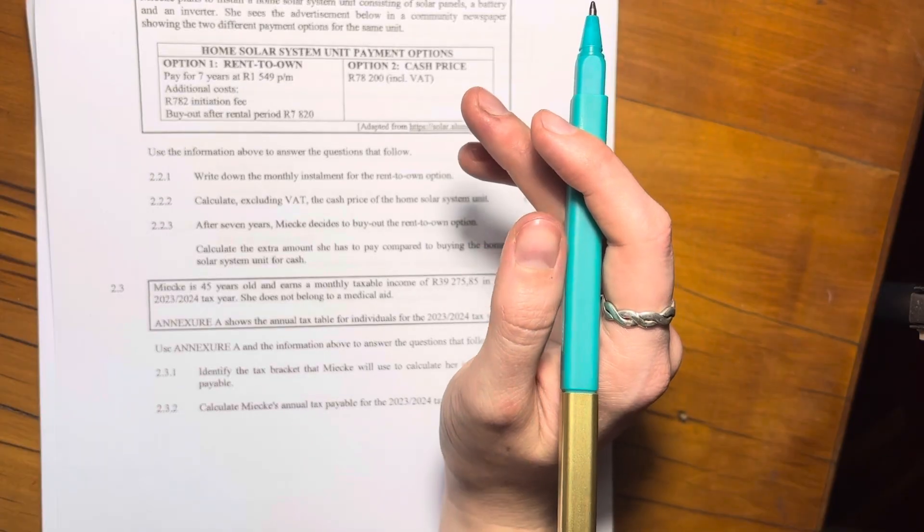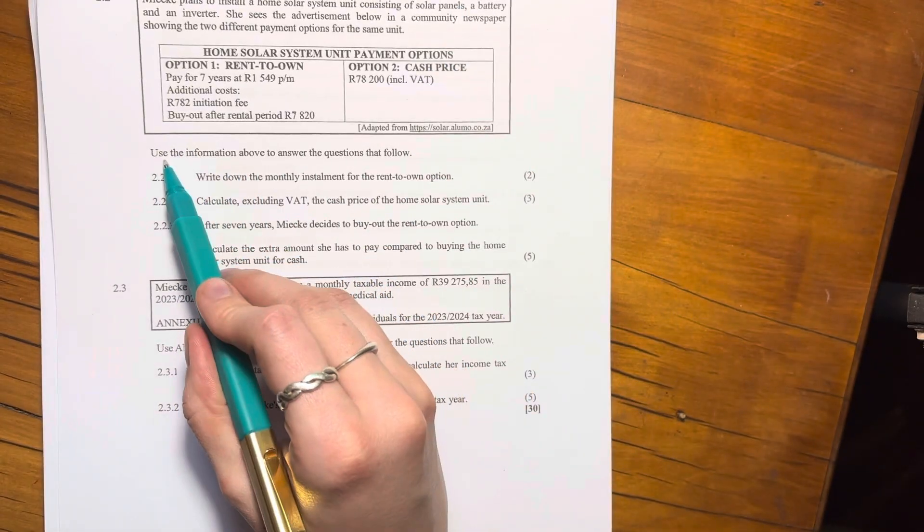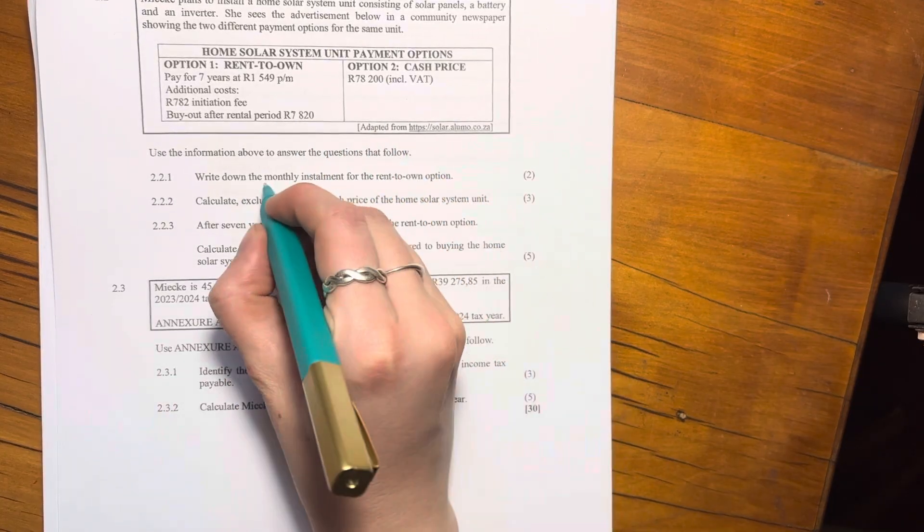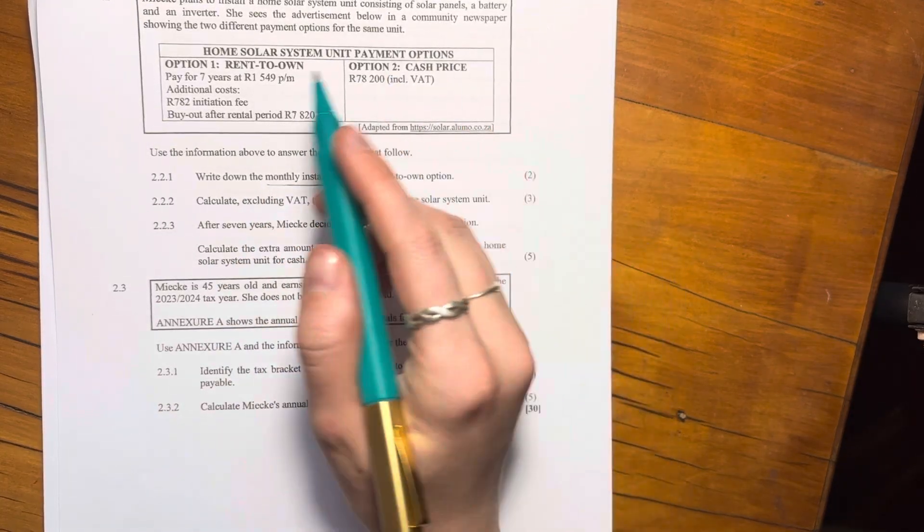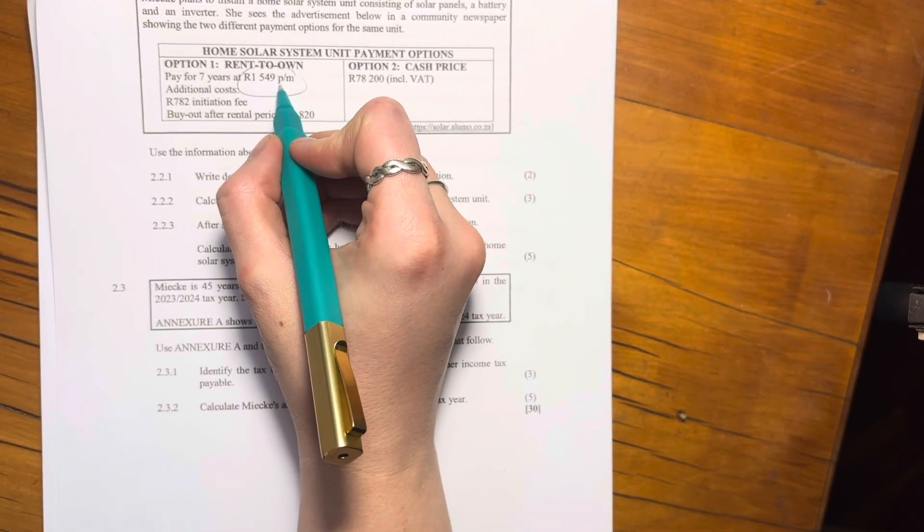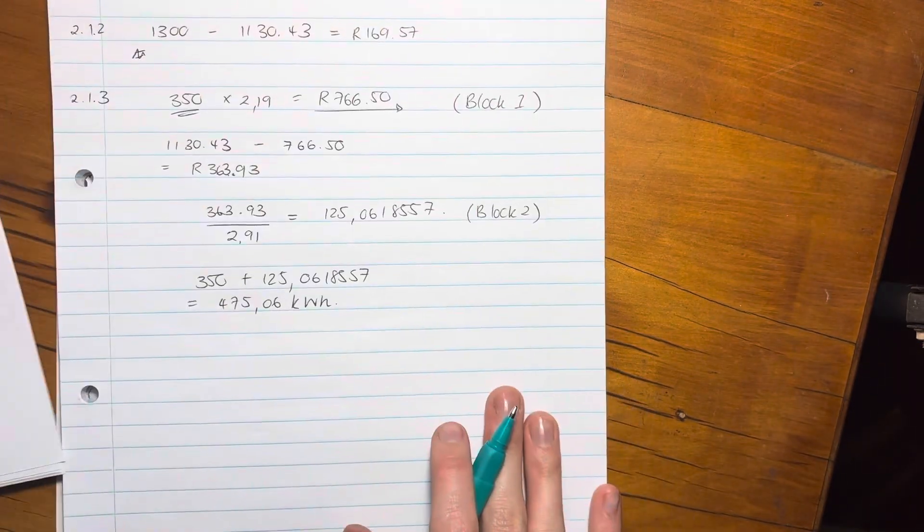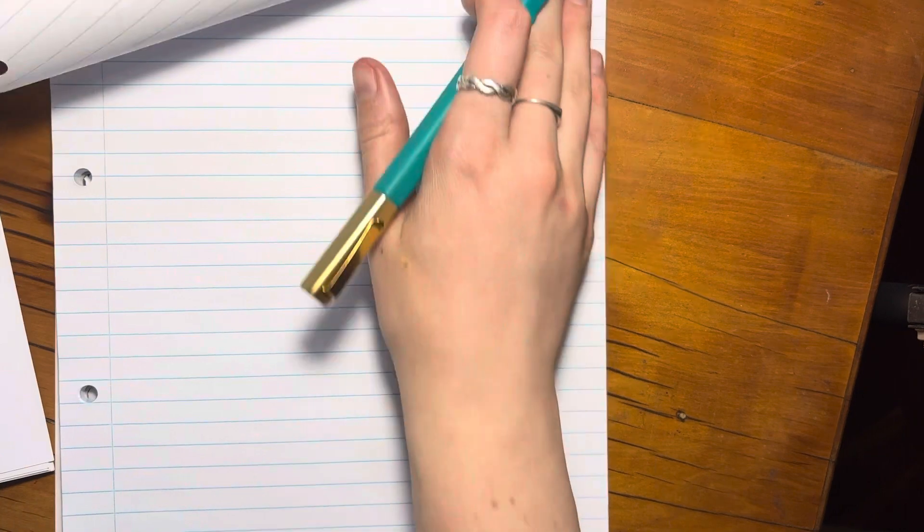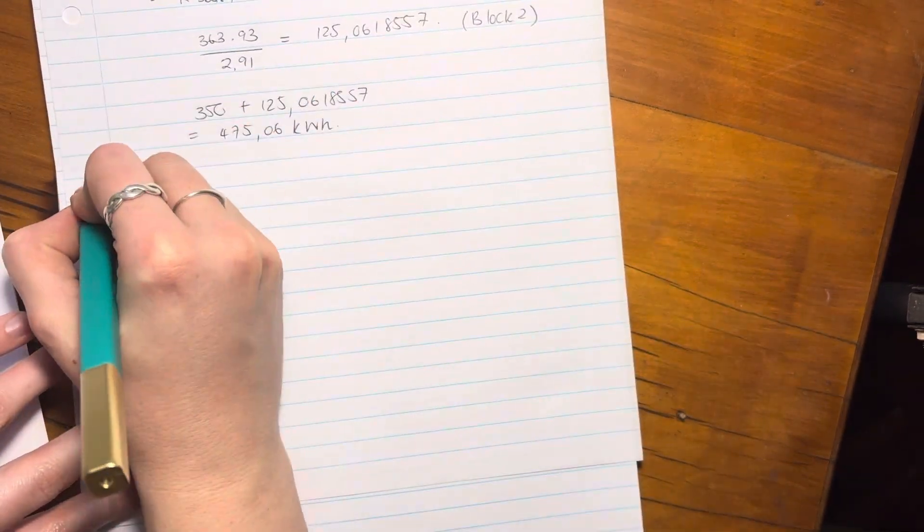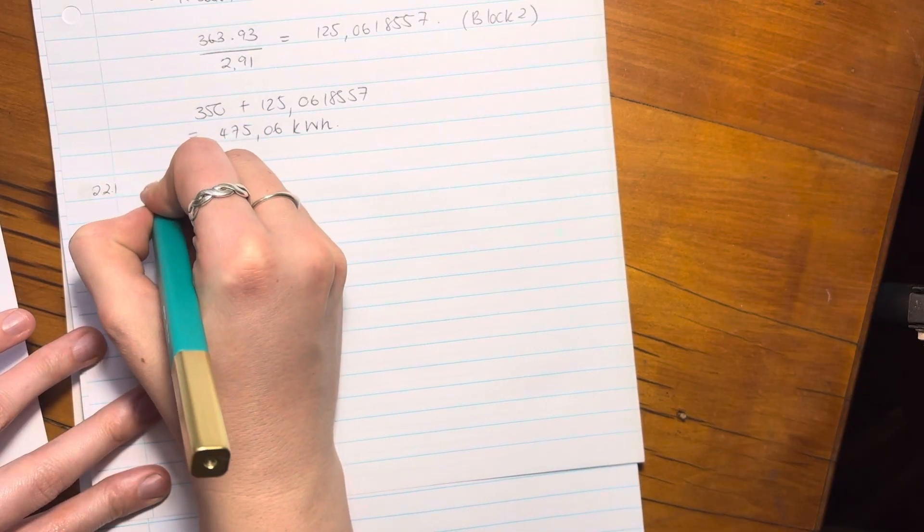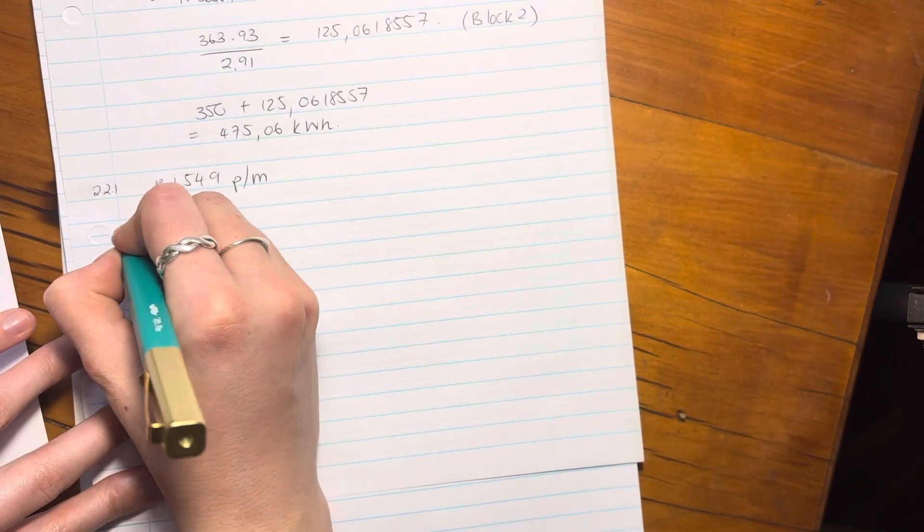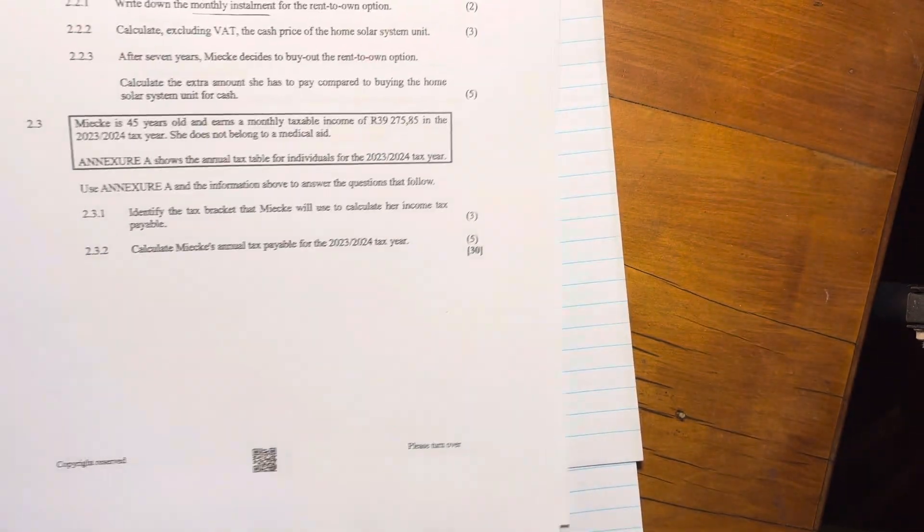So let's go and see what the questions are here. Use the information above and answer the questions that follow. Write down the monthly installment for the rent-to-own. So the monthly installment is going to be this over here. They're just testing that you know that P slash M means per month. So we're going to be on 2.2.1 and you're going to say R1549 per month and we're done there. That was pretty easy. They're just checking that we're working with the right amounts.